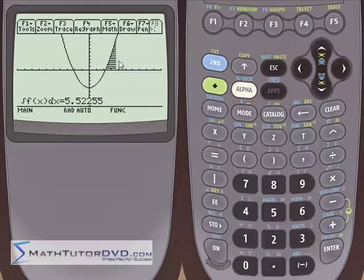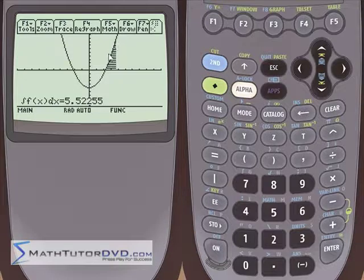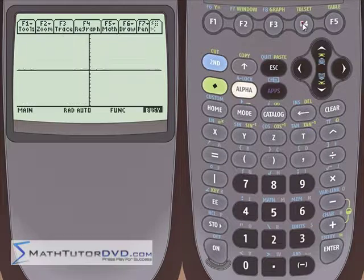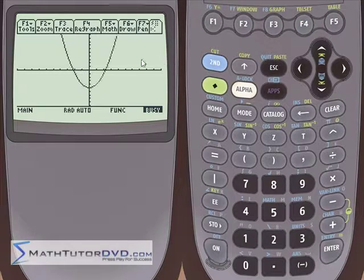And if you were to do this integration by hand, you'd get 5.5255. So what I want to point your attention to is anytime the area that you find is above the x-axis, see here we're shading from the curve down to the x-axis, any area up here you're going to get a positive number.